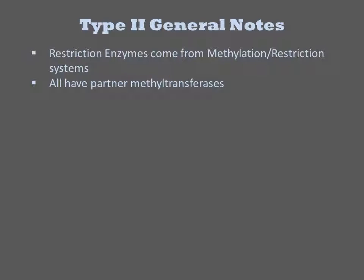The type 2 restriction enzymes are usually components of methylation restriction systems from various microbes. In these systems, the restriction enzyme is expressed in the cytoplasm. The genomic DNA is protected from cleavage because it is methylated at cognate sequences. Thus these systems also have a partner methyltransferase. When cloning DNAs from genomic DNAs, there may be methylation at sites of common restriction enzymes.